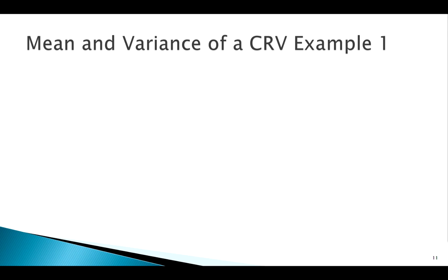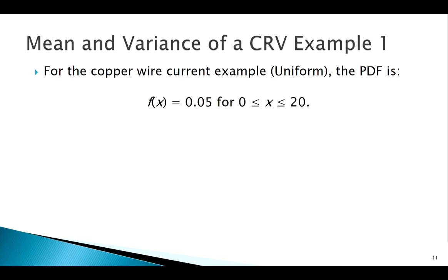The last thing we want to do here, working with general continuous random variables, is come up with means and variances. So go back to that copper wire example, remember it was uniform. Let's try to find the mean and variance of a uniform distribution. We already know there are formulas you can plug in, but let's try to do it mathematically. Let's find the mean here.